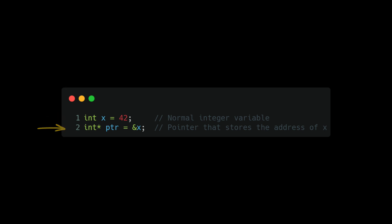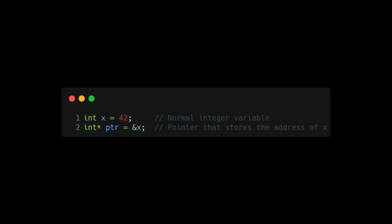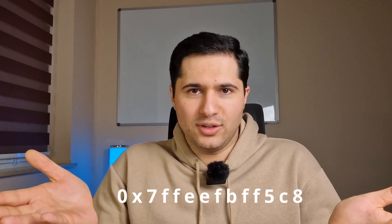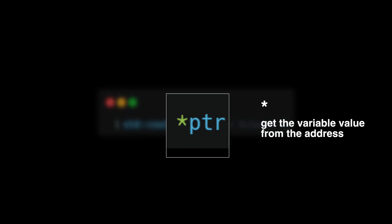In this C++ example, we define a normal integer value, and then in the pointer we save the reference to this value, which is its memory address. The ampersand operator gets the address of the variable instead of the actual value, which is 42. So the pointer `ptr` saves something like `0x7...`, which is the location of x. To access the actual value we use the dereference operator — a star — so `*ptr` printed with cout gives us 42.